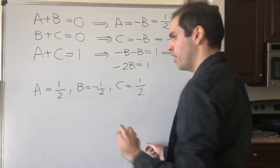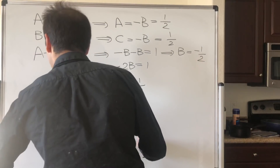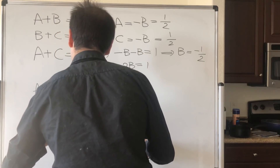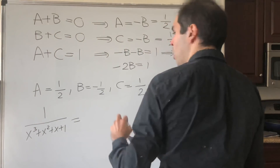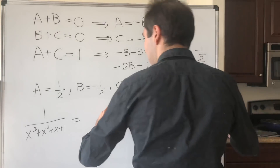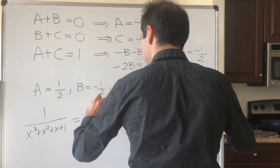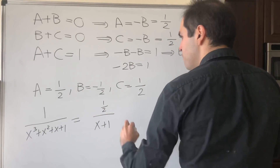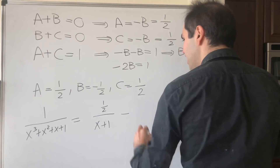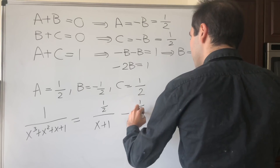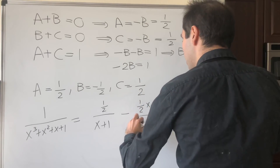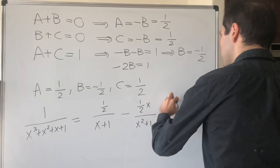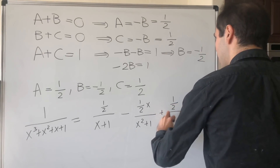So what does that tell us about our function? 1 over x cubed plus x squared plus x plus 1 becomes: one half over x plus 1, plus minus one half times x over x squared plus 1, plus one half over x squared plus 1.